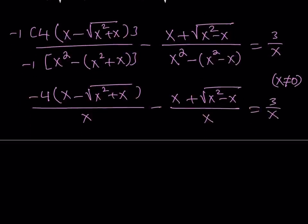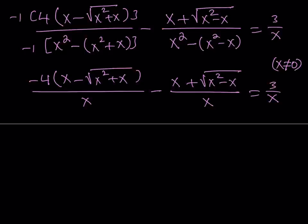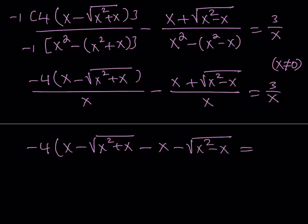Now, notice that all the denominators are the same, so we can totally forget about them. In other words, multiply both sides by x, and remember that x does not equal 0. So this gives us negative 4 times the quantity x minus the square root of x squared plus x, minus x minus the square root of x squared minus x equals 3.